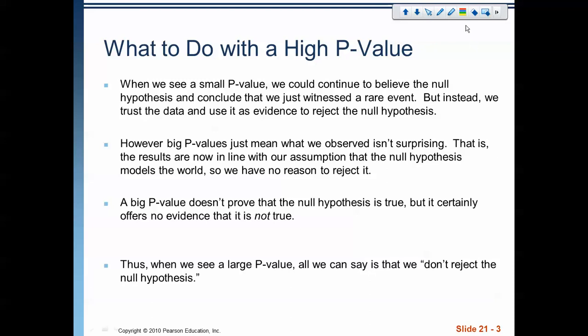All right, everybody. Hello. This is our first lecture in chapter 21 of the Statistics Modeling Our World Curriculum. In this chapter, we do a variety of things: we talk a little bit more about p-values, define what an alpha value is, talk about using confidence intervals to do a hypothesis test, type 1 and type 2 errors, and a little bit about the power of a test. It's a big smorgasbord of things. Let's begin just talking a little bit more about p-values.